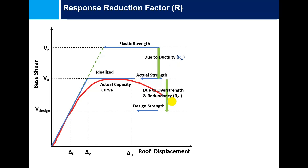The response reduction factor R reflects the capacity of the structure, which is shown by the ductility factor, over-strength, tendency damping, and the capacity of the structure to dissipate sufficient amount of hysteretic energy through numerous inelastic cycles or inelastic behavior.